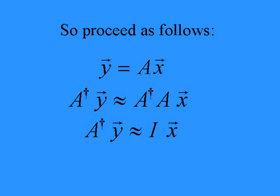As with the usual matrix inverse, A dagger A just equals the identity matrix, yielding at last an approximate value for the unknown x vector.